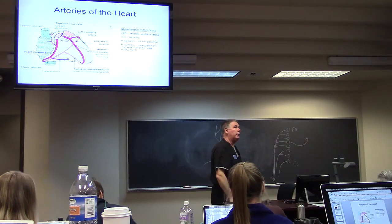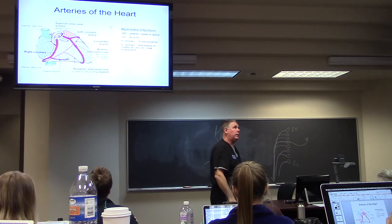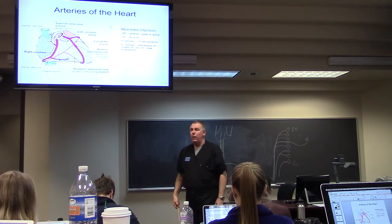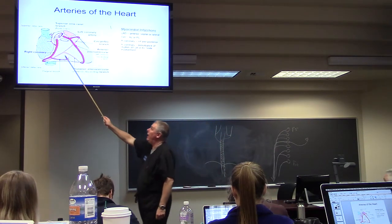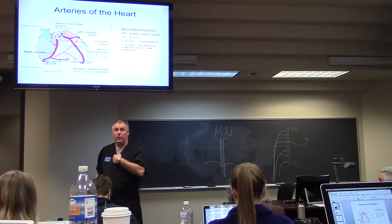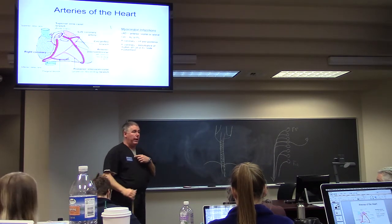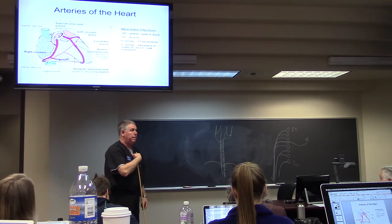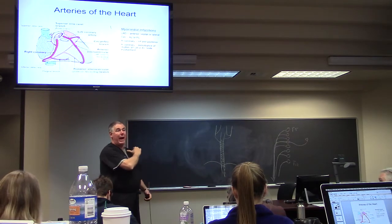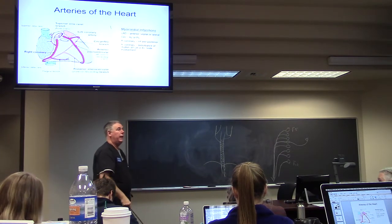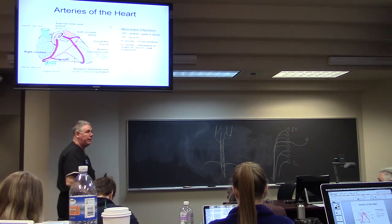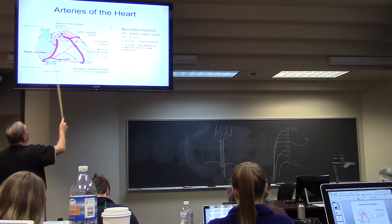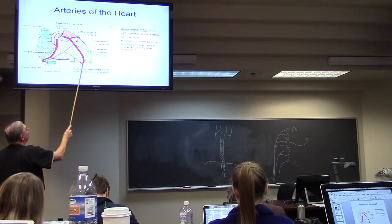The arteries of the heart: the first two branches off the ascending aorta are the right and left coronary arteries. The right coronary artery is in front — if you want to find it, it's dead in the front. The left coronary artery is all the way around the back of the aorta; it comes out of the posterior aspect. They travel in the coronary groove and the interventricular sulcus.